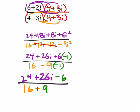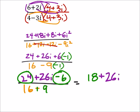Now I'm just looking to combine like terms. So in the numerator, I've got 24 minus 6, which is 18. And then I've got plus 26i. And this is all over 16 plus 9, which is 25.